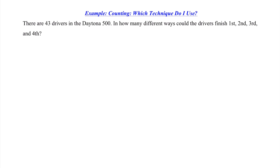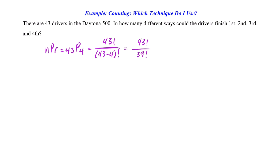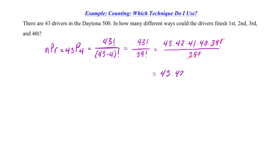If we go the route of permutations, we're in an NPR situation with 43 drivers, choosing four of them for first through fourth. Applying the formula, we get 43! over (43 − 4)!, which simplifies to 43! over 39!. Expanding, we can stop at 39! because it cancels with the denominator, leaving us with 43 × 42 × 41 × 40.